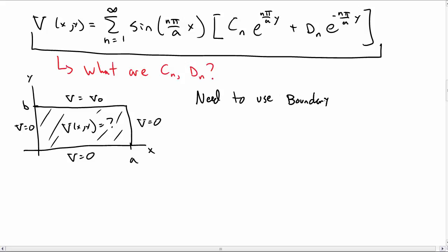What we need to do is use the boundary conditions now in the y direction. We've used the boundary conditions in the x-direction to simplify that function. So in the y direction, at y equal to 0 down here, V is equal to 0.